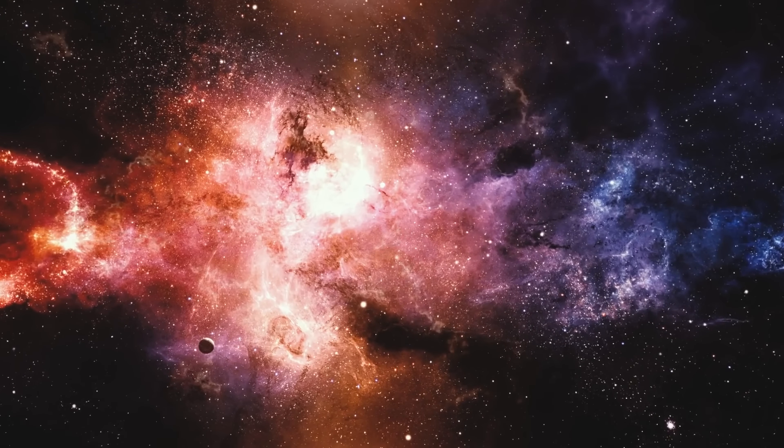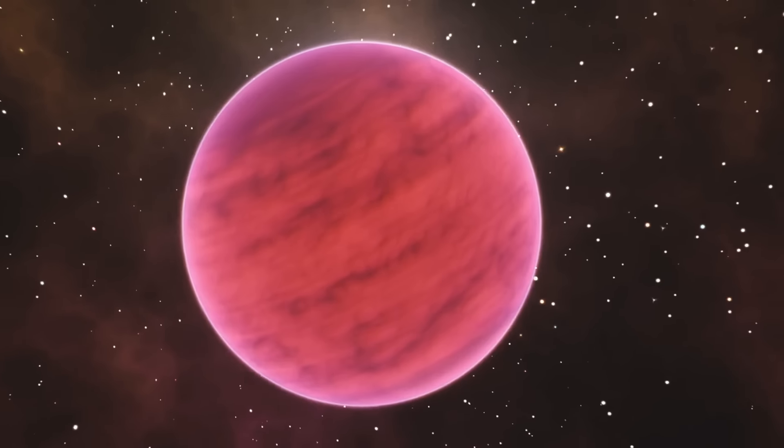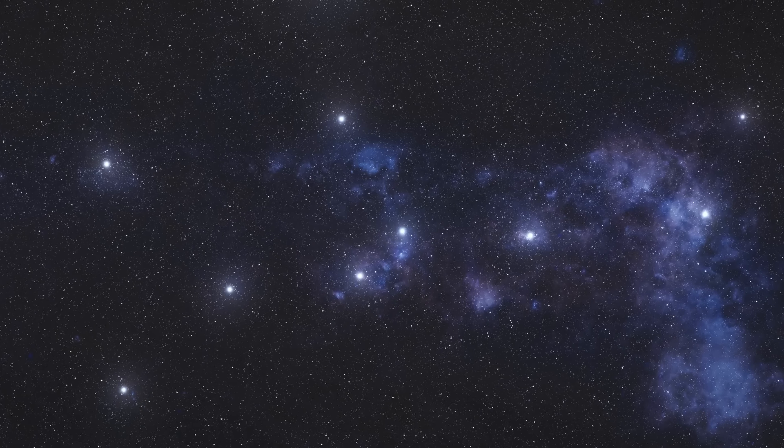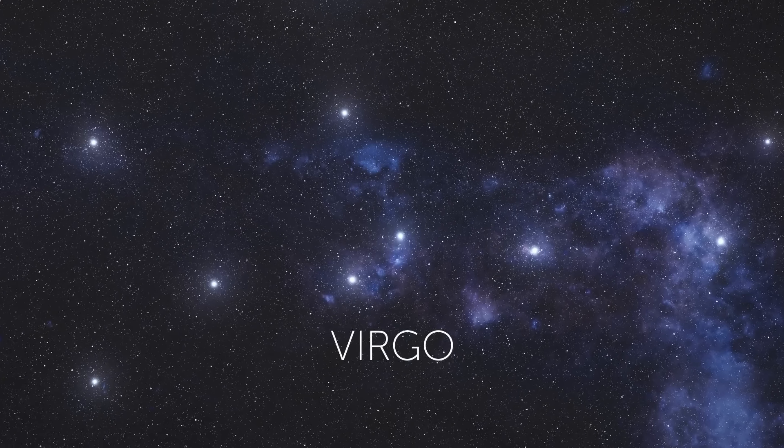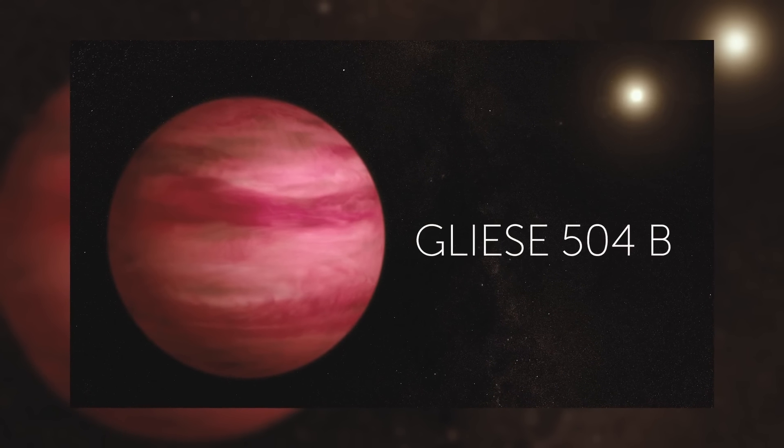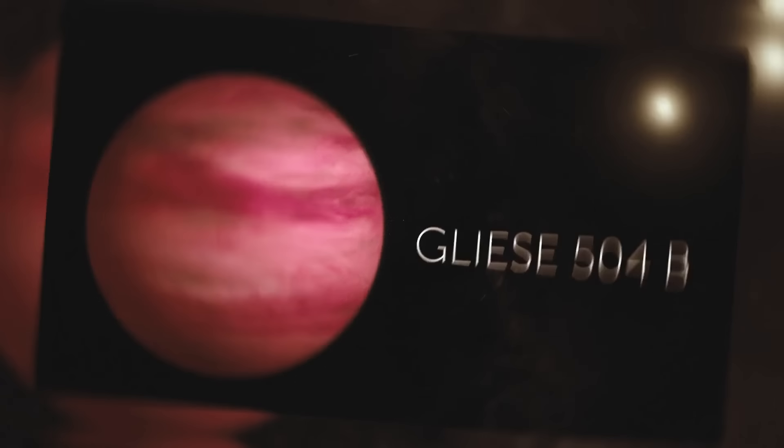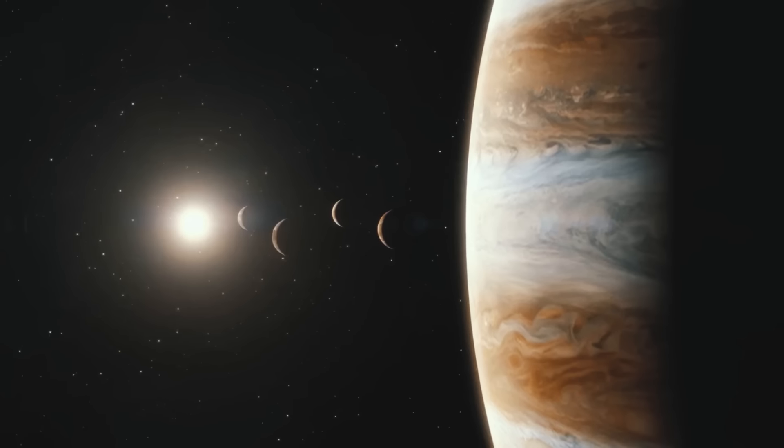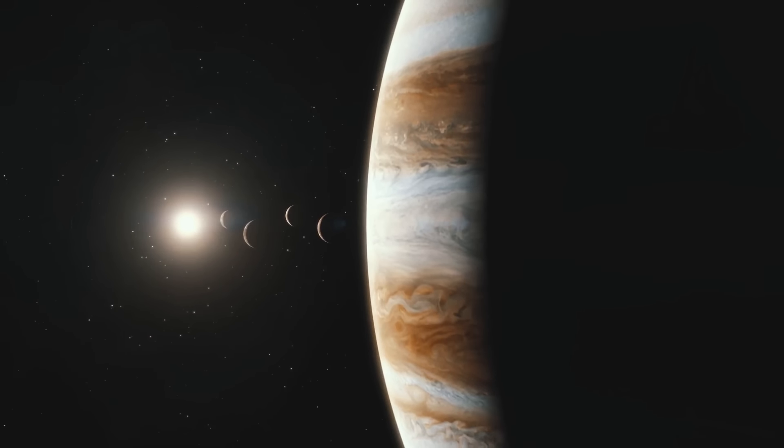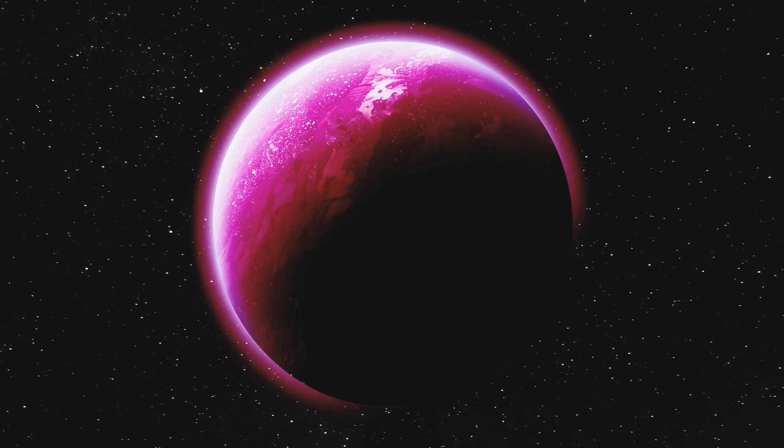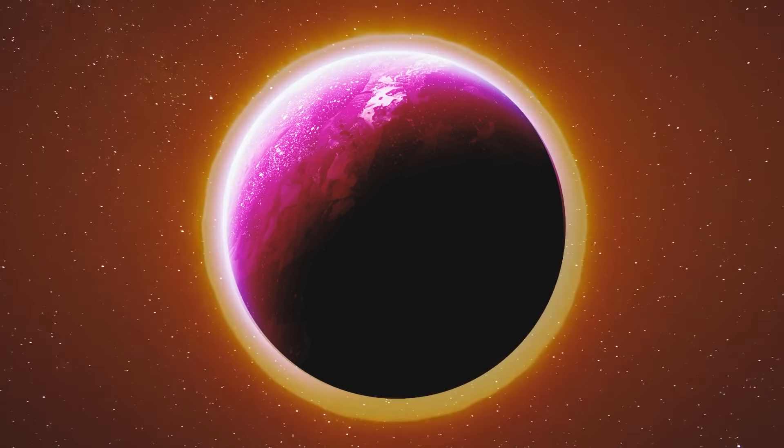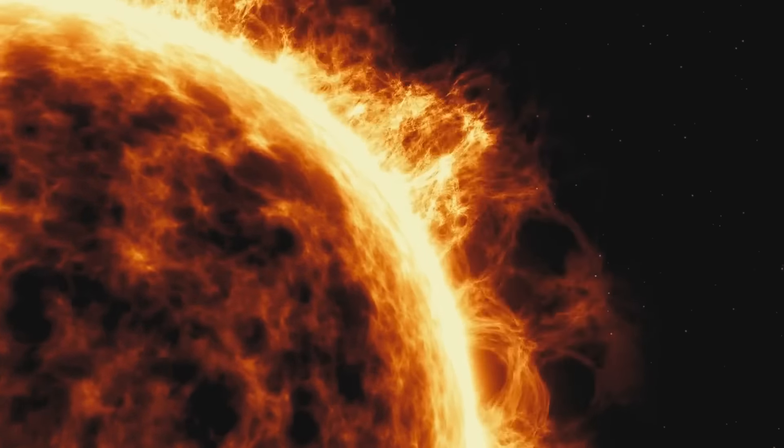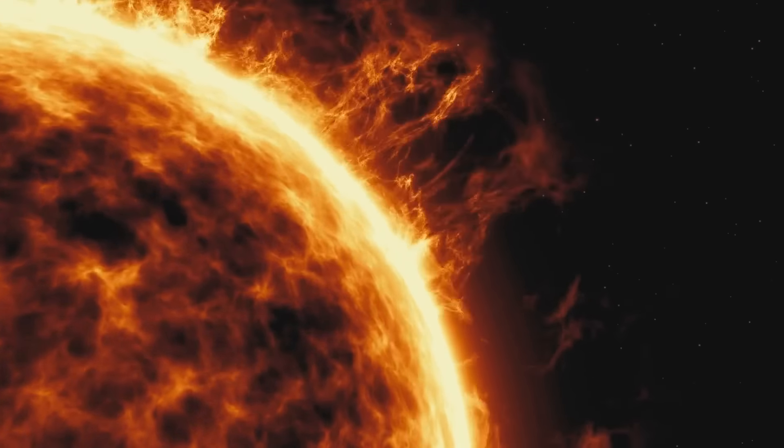There is an exoplanet that stands out among the rest because of its awesome magenta color. You can find this world in the Virgo constellation. The planet is called Gliese 504b. The distance between this planet and its parent star is 9 times the distance between the Sun and Jupiter. The planet formed relatively recently and is still glowing with heat. That's why its surface looks pinkish.